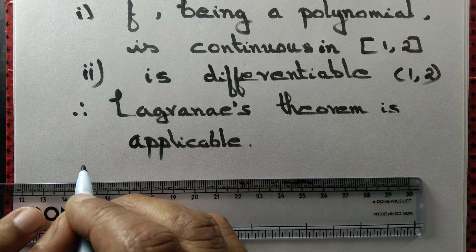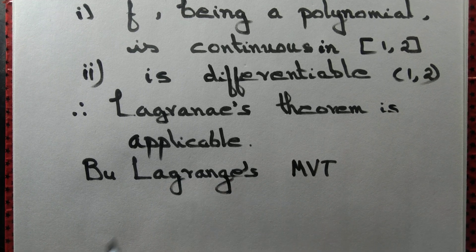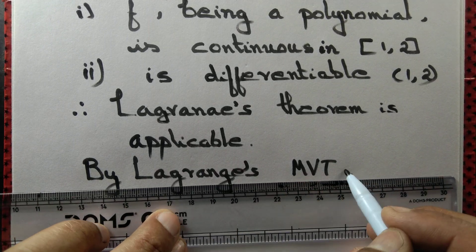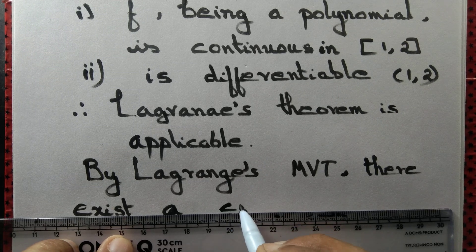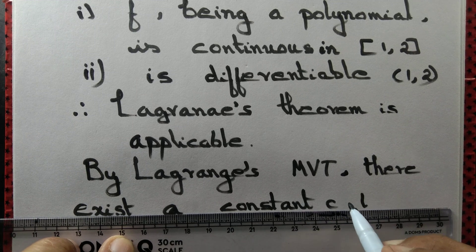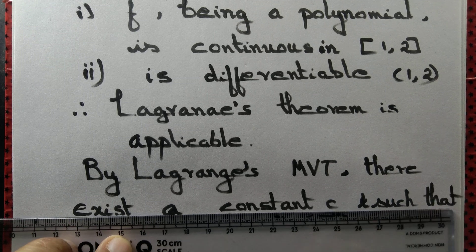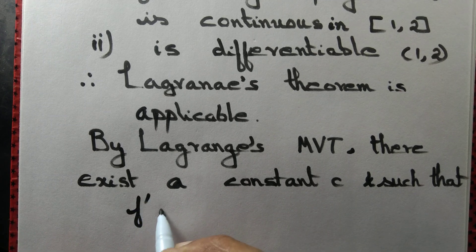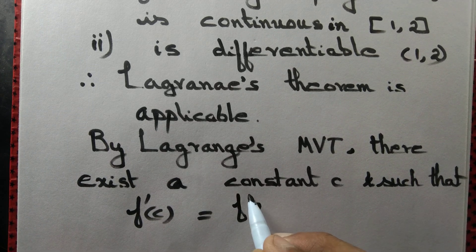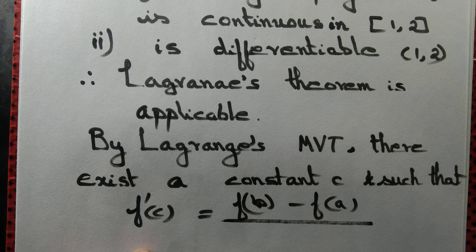By Lagrange mean value theorem (LMVT), there exists a constant c such that f'(c) = [f(b) − f(a)] / (b − a), where c lies between a and b.